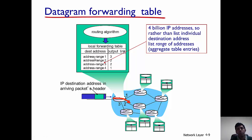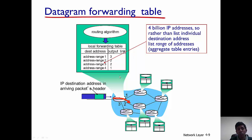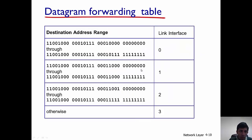If a packet belongs to destination address range 2, the corresponding output link is going to be 2. But we have to maintain address ranges — we cannot keep individual IP addresses, because the number of hosts on the internet is really large, in fact a few billion. Keeping a list of a billion hosts in the router is just not possible, so there has to be a smarter way for routers to track which packets are routed along which interface.